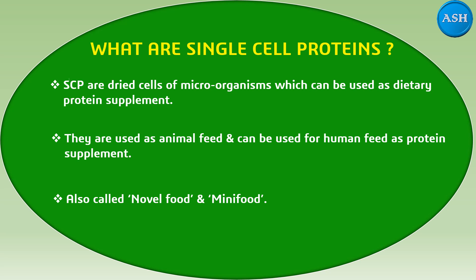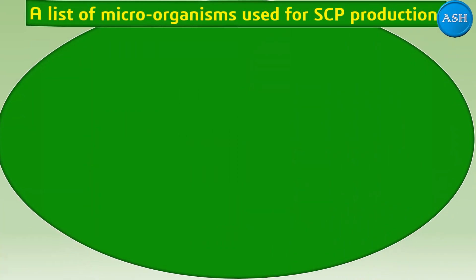Single cell protein is also known as novel food and mini food. It is a new form of food which contains more amount of protein and is consumed in a very small amount, so it is a novel as well as a mini food. Now, let us list out the microorganisms which are used for single cell protein production, that is SCP. There are a variety of microorganisms that can be used for this production.